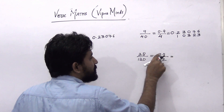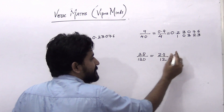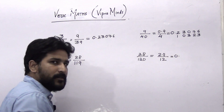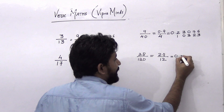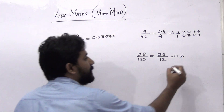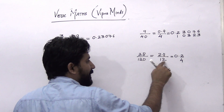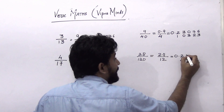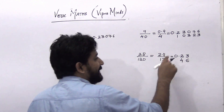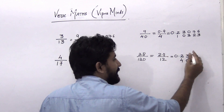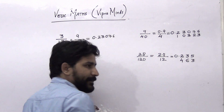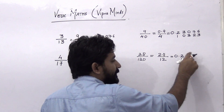Now divide this. Since 2 doesn't go into 12, take 0 as quotient and it becomes 28. So 12 into 2 is 24, remainder will be 4. The next number to divide by 12 is 42 — 12 into 3 is 36, remainder will be 6. Next number is 63 — 12 into 5 is 60, remainder will be 3. Next number is 35.